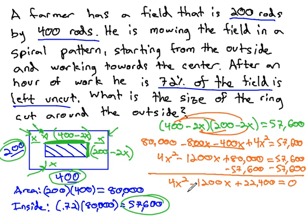Now that it's equal to zero, we're ready to factor. Always start with the GCF. We have a GCF of 4, gives us x squared minus 300x plus 5,600 equals zero.